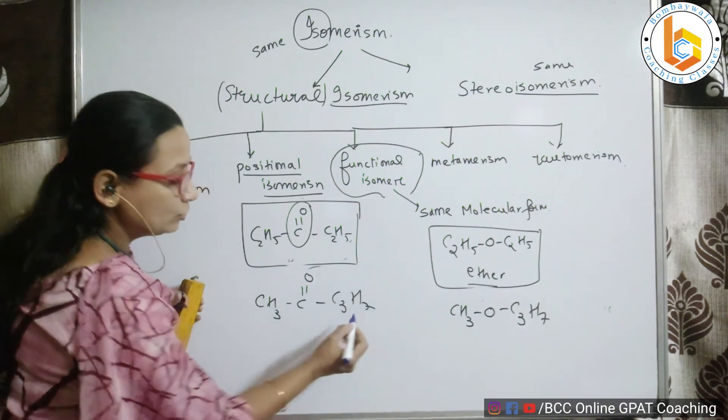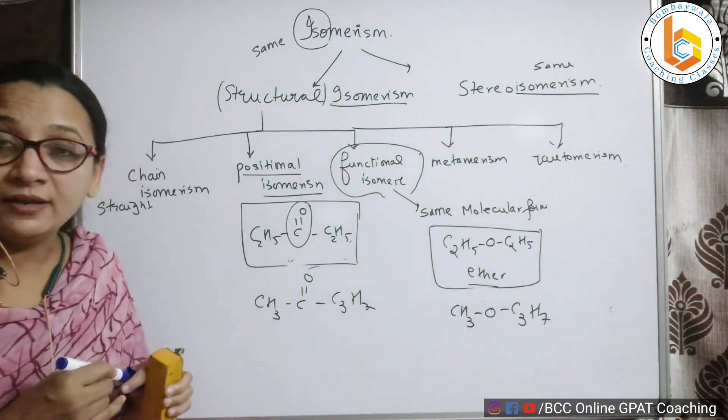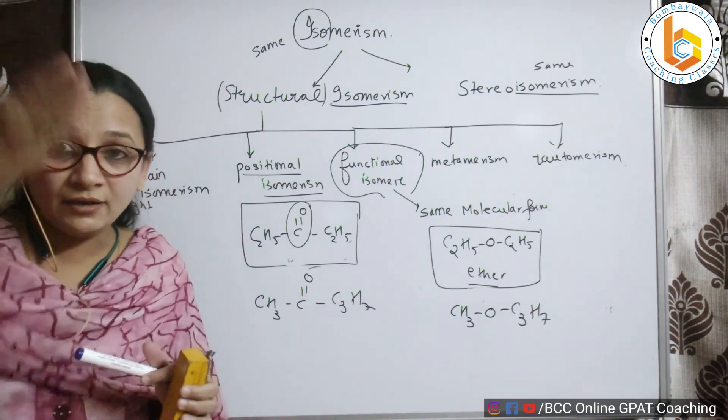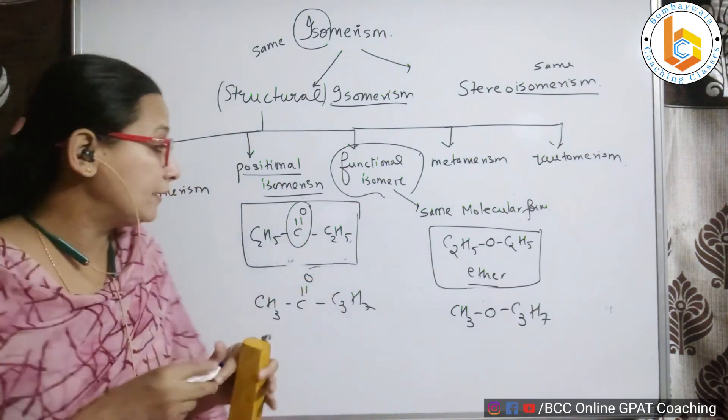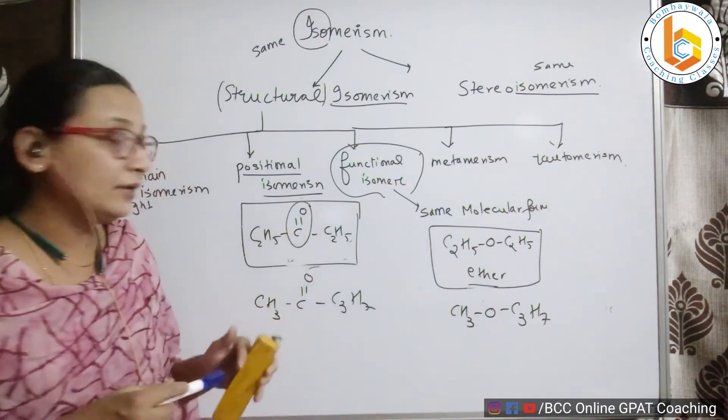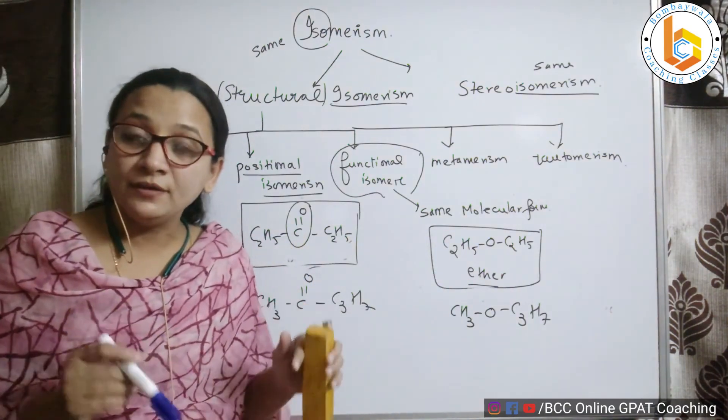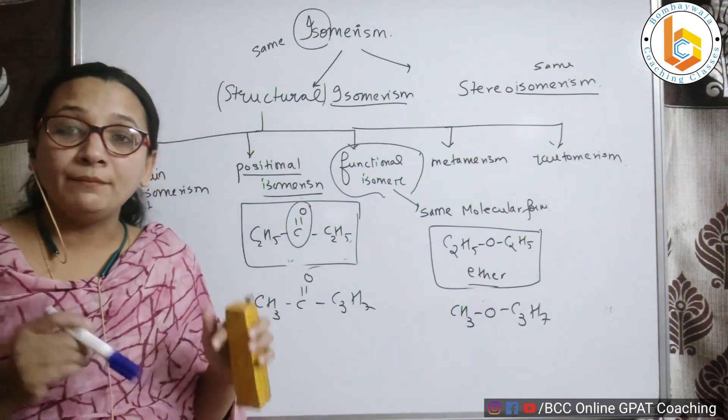So the alkyl chain is different on both sides of the cleaving, like in ether or in ketone. Such a phenomenon is referred to as metamerism. Such a phenomenon is referred to as metamerism.